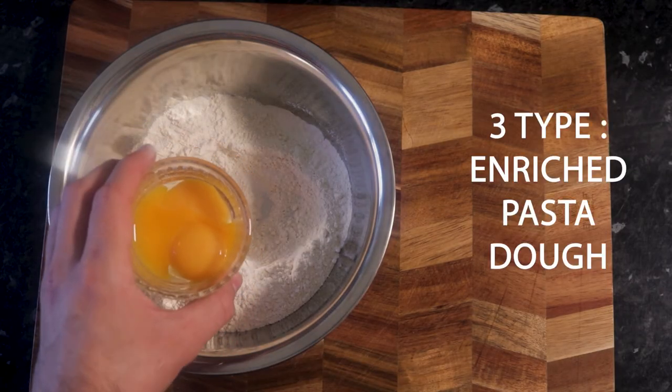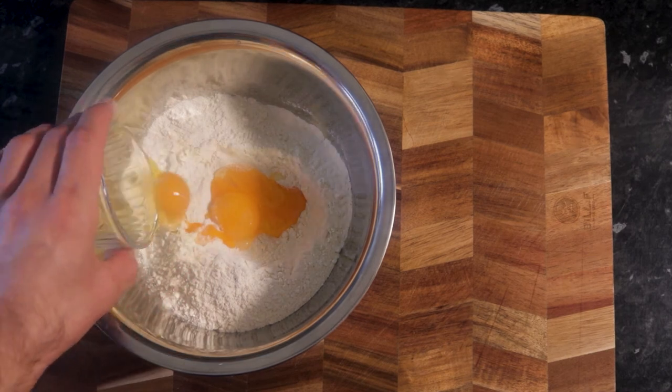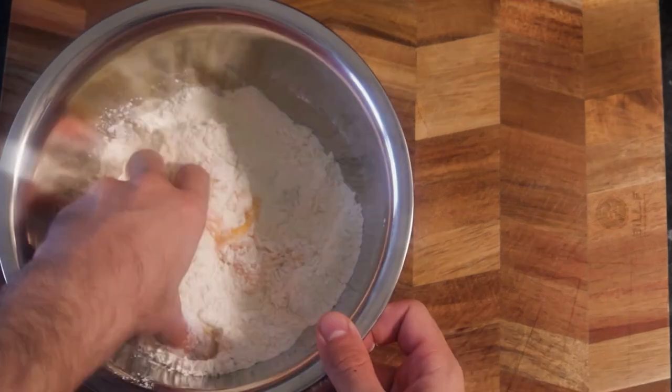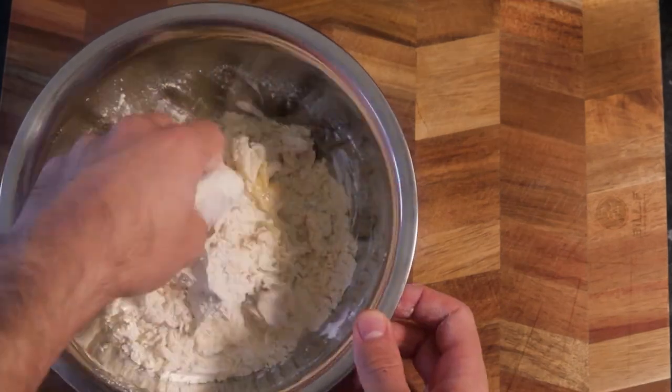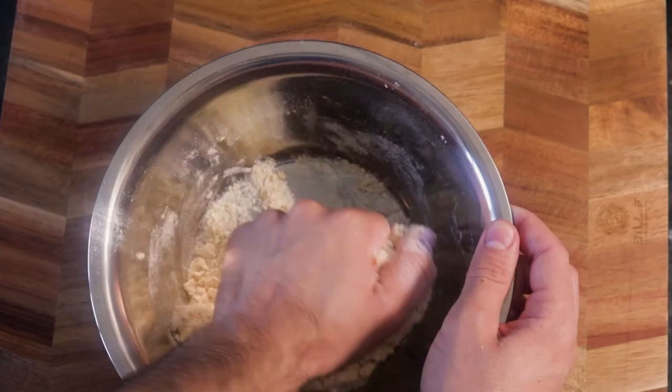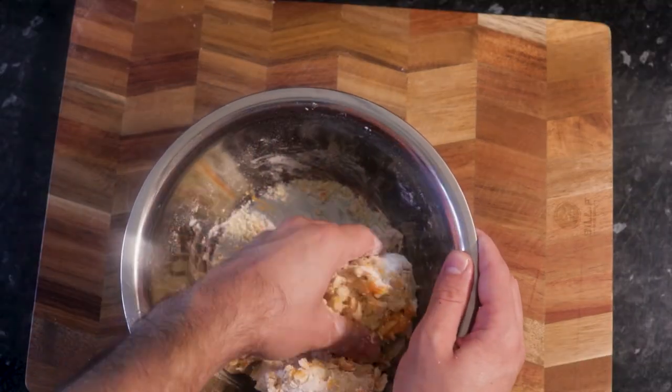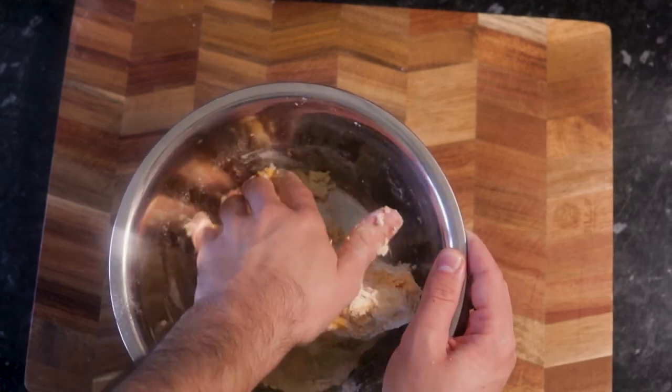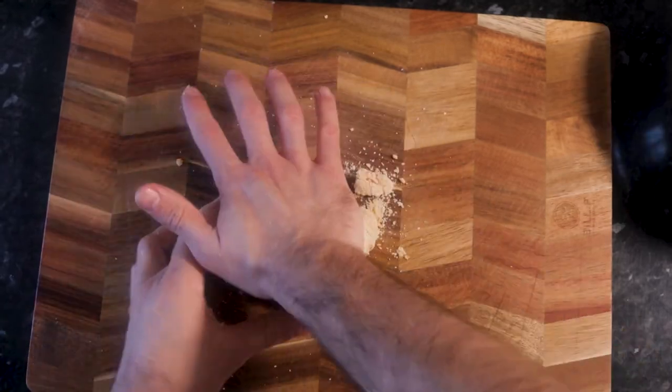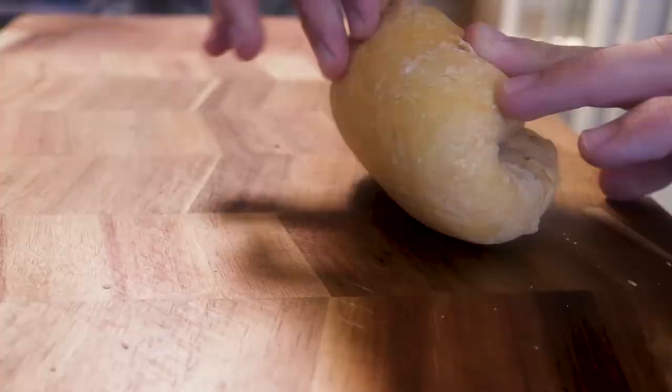The third way is enriched egg pasta dough. In this case, we're gonna add one whole egg and three egg yolks to 200 grams of flour. You can use either semolina or 00 flour. In this video, we're gonna add the egg yolks one by one just to see how they incorporate. Feel free to mix everything together in a bowl and work the dough until well incorporated. Place in the fridge wrapped and let the gluten relax for about one hour, then your pasta dough is ready to roll on the pasta machine.